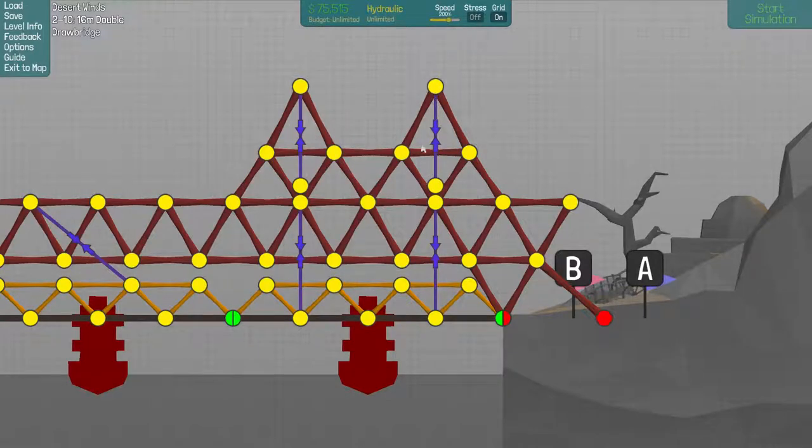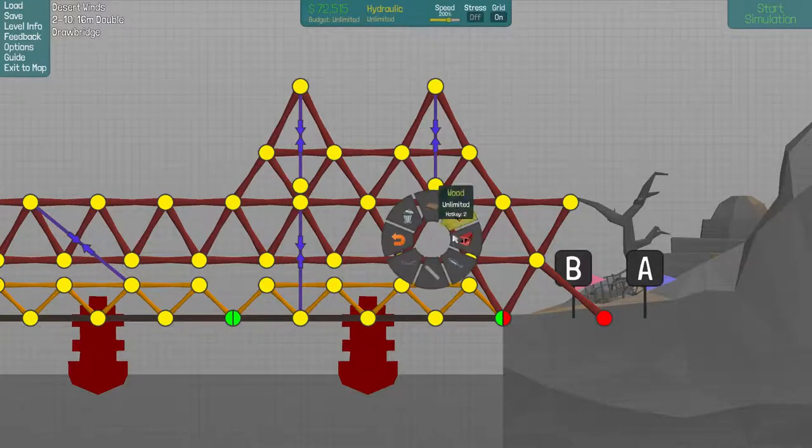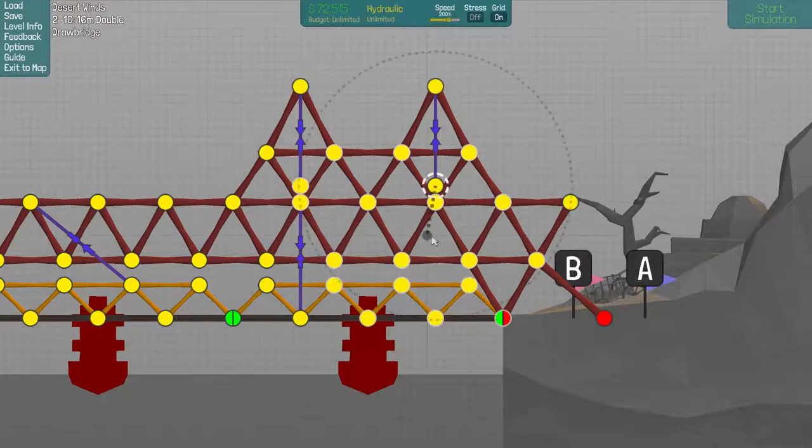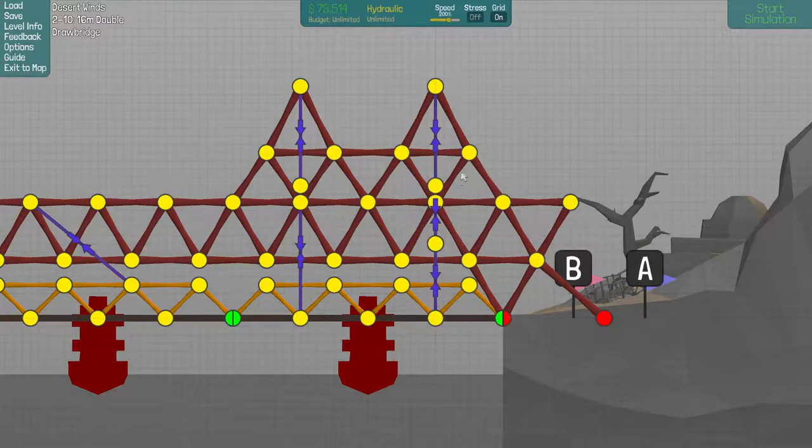So basically, when you attach your two hydraulics together, then you're going to get the combined power of, or the combined compression of both of them. Adding multiple hydraulics within the same space has no added benefit.